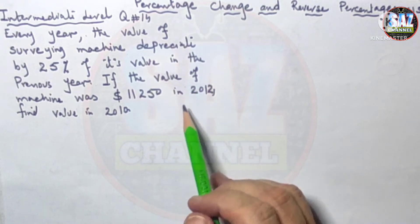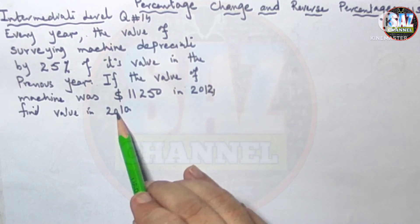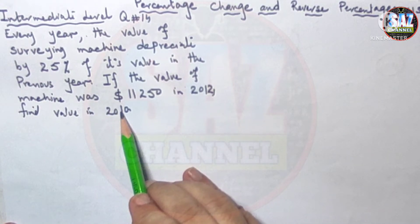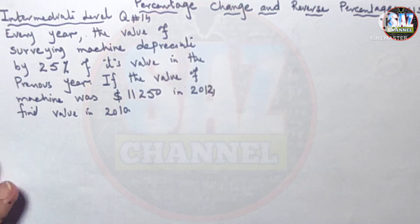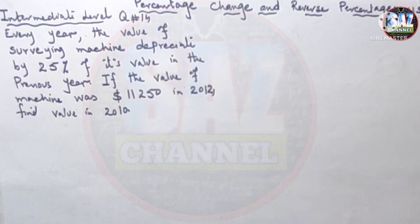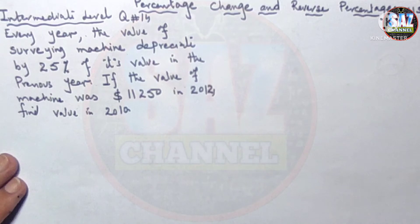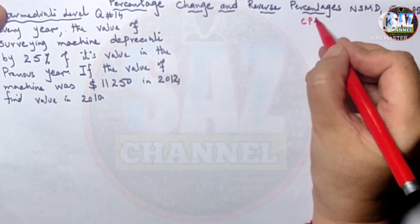We need to find the value of the machine in 2010 — that is going back two years. For this purpose we have to apply the concept of reverse percentages. If you are not clear on percentage change increase or decrease and reverse percentages, check the basic lessons linked in the description. The lessons require continuous integration and practice, so let us apply the CPA approach — Concrete, Pictorial and Abstract.